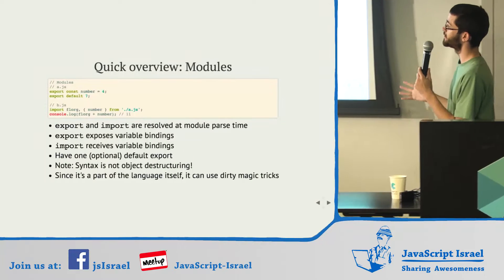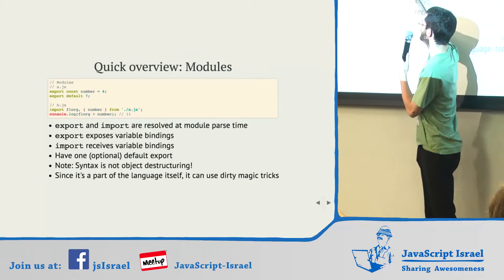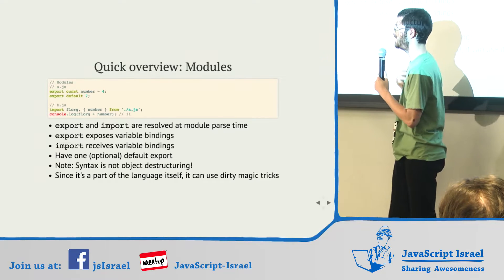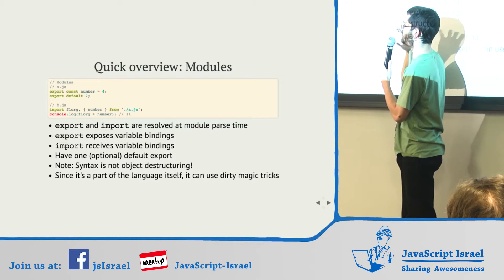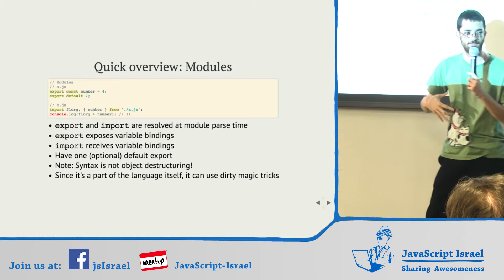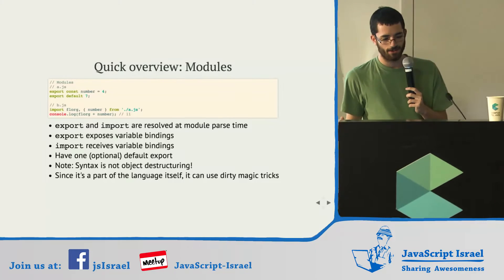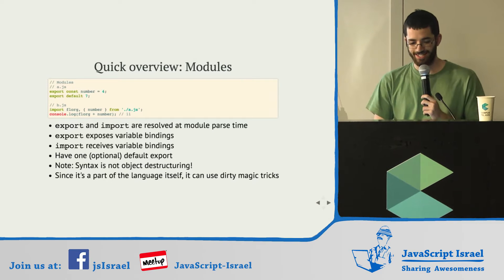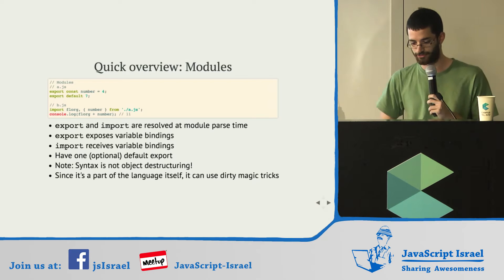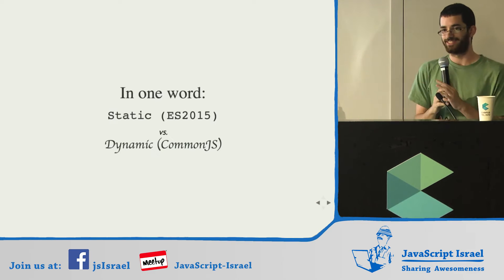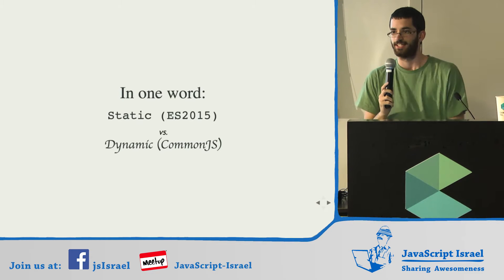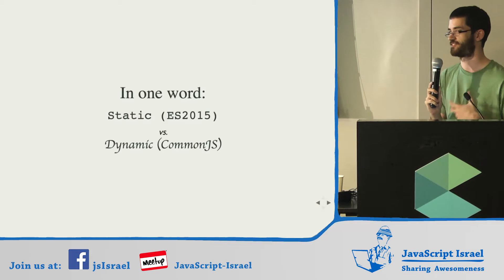ES modules are very similar. You have an export keyword and an import. What they actually do — I find it easiest to think about — is they deal with variable bindings. Export exposes a variable binding and import takes it out. And it can do that because it's part of the language, not a library like CommonJS. The easiest way to think of the difference is that ES modules are static and CommonJS modules are dynamic.